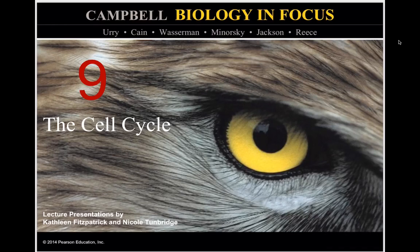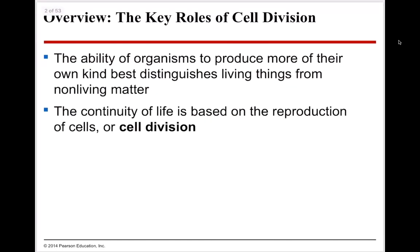Today we're going to be talking about chapter 9, which covers the cell cycle. The key roles for cellular division: cellular division describes an organism's ability to produce more of their own kind, and it distinguishes living things from non-living things — biotic from abiotic. It's actually a characteristic of life to be able to replicate or reproduce. Cell division is one way we can do this, and it's actually just one part of our overall cell cycle.